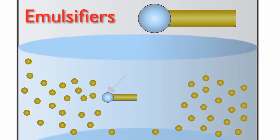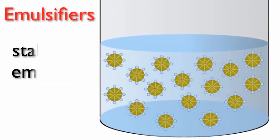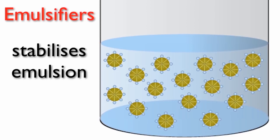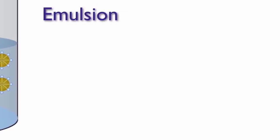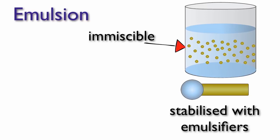This prevents separation and thus stabilizes the emulsion. In summary, an emulsion is a mixture of two substances that are immiscible with one another. These emulsions can be stabilized by adding emulsifiers.